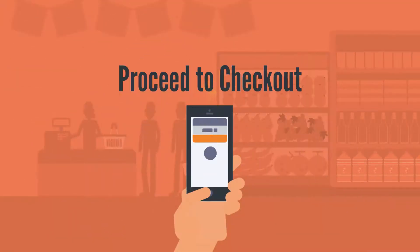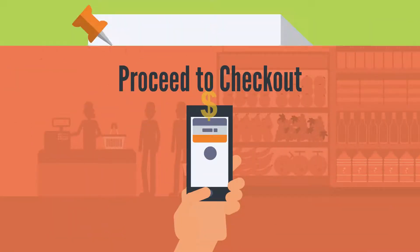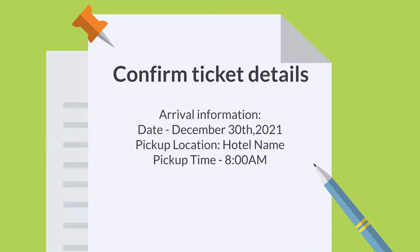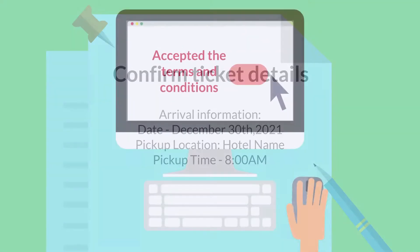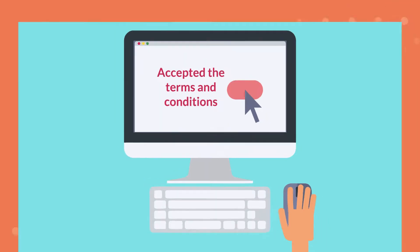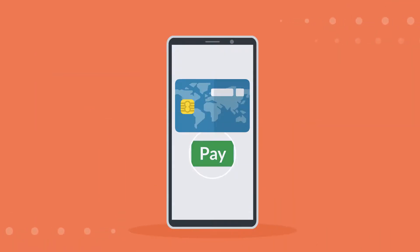Step 7: Review the cart and click Proceed to Checkout. Step 8: Complete the travel form — ensure to include pickup date and time. Step 9: Select 'I've read and accept the terms and conditions,' then proceed to pay.